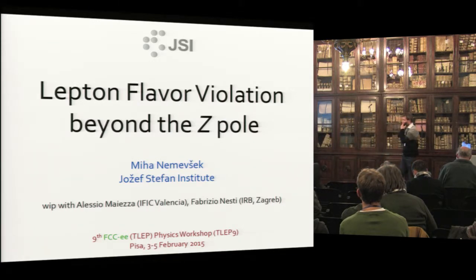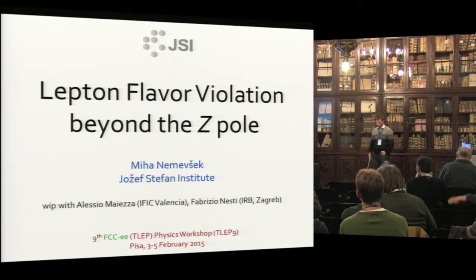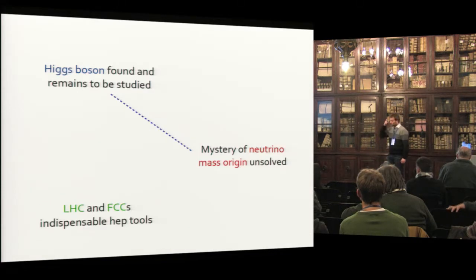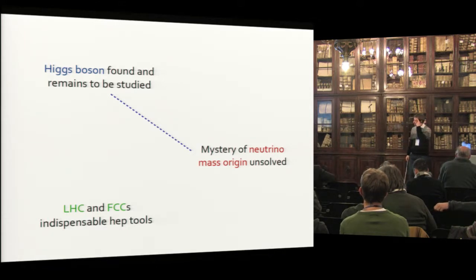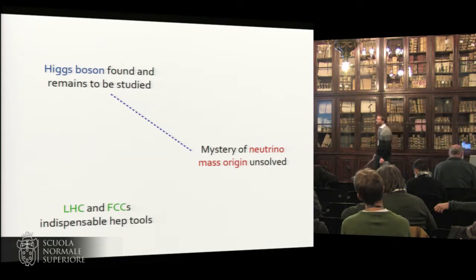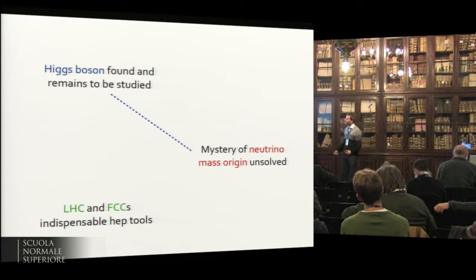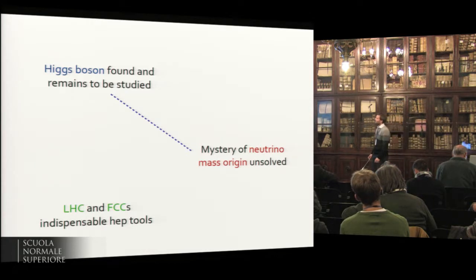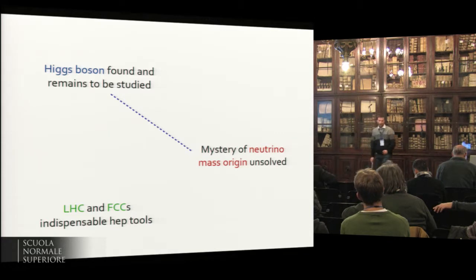It's on the topic of lepton flavor and number violation in connection to the Higgs. We know that the Higgs boson has been found and surely remains to be studied in the long run. At the same time, the origin of neutrino mass remains an unsolved problem in particle physics, and we have high-energy tools at our disposal to try to find the connection. Today, I'd like to investigate this link between the Higgs boson and neutrino masses.